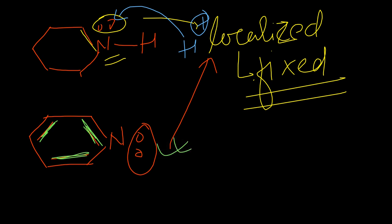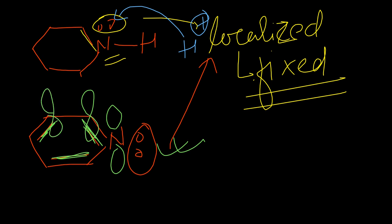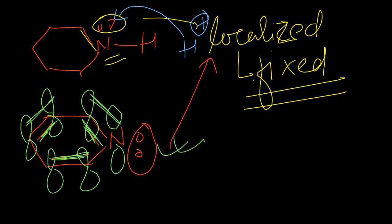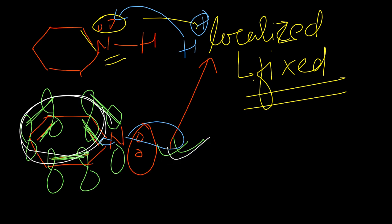In pyridine, the lone pair of nitrogen will not participate in resonance. Every atom has a p-orbital associated with the ring. The lone pair on nitrogen in pyridine is perpendicular to the pi electrons - it will never participate in resonance. So this lone pair is also localized and H+ can easily attack.